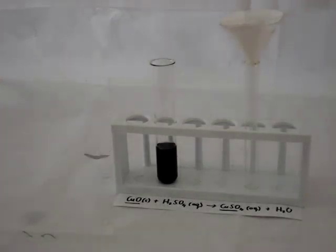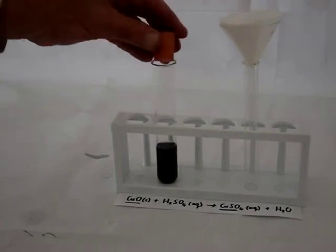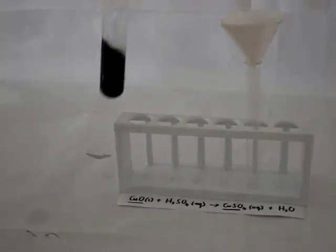Copper sulfate is a blue substance, and although now we can't really see very nicely that it's formed a blue substance, we'll give it a little bit of time, and then we're going to filter what we have over there, the solution over there.